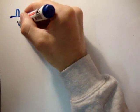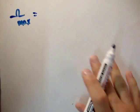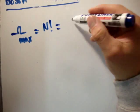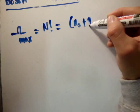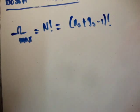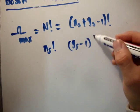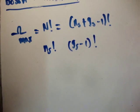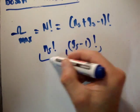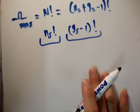So now, what's the maximum multiplicity? Well, that hasn't changed. That's still N factorial. That's equal to N sub S plus G sub S minus 1 factorial. Now we need to take into account any of the duplicates. Well, they're identical particles. So there are N sub S duplicates of the particles, or N sub S factorial, and then G sub S minus 1 factorial duplicates of the partitions.